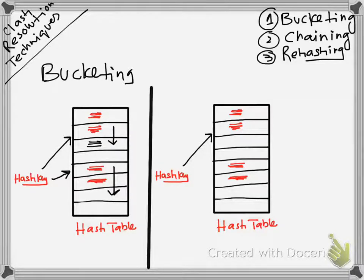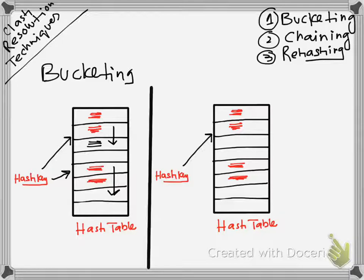When the computer accesses the same hash key for reading the record rather than saving it, the computer would have one key field. With that key field, a hash key will be generated. The computer would point to that location in the hash table and find out that this is not the required key. Since it is already known that the bucketing clash resolution technique is used, the computer would start automatically looking forward.